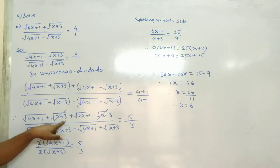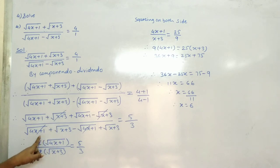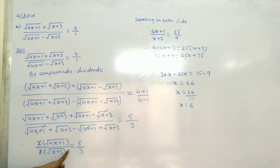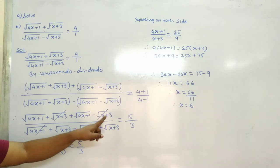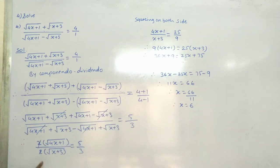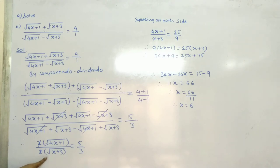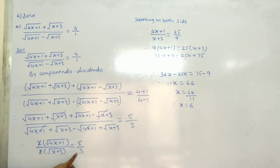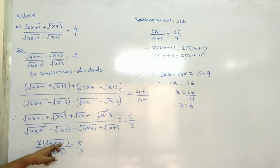The √(x+3) terms cancel, and the √(4x+1) terms cancel on the other side, leaving 2√(4x+1) upon 2√(x+3) is equal to 5 upon 3. The 2s cancel, giving √(4x+1) upon √(x+3) is equal to 5 upon 3.